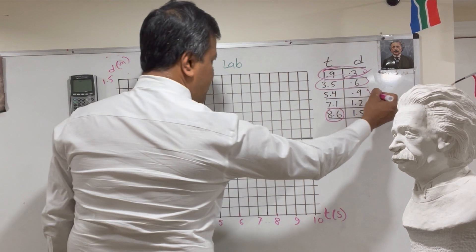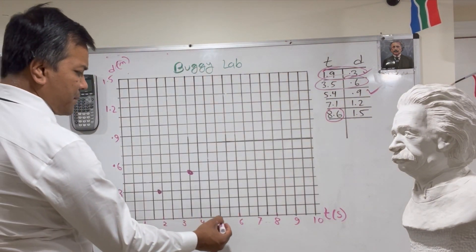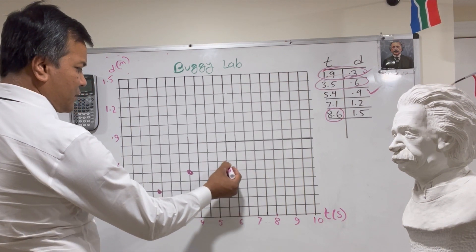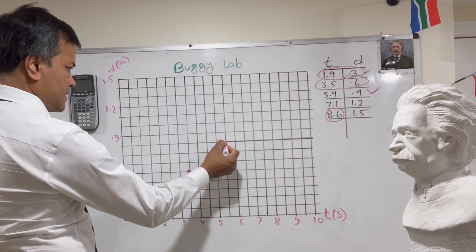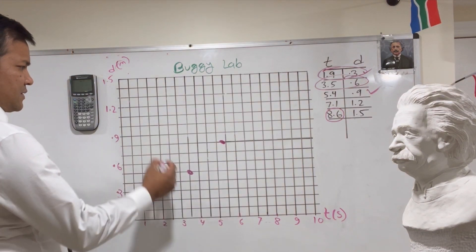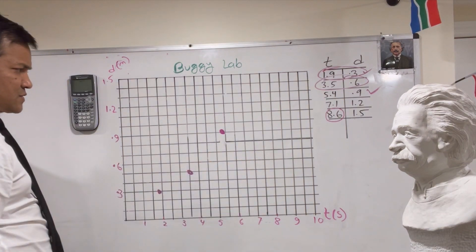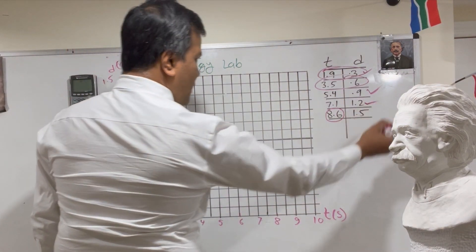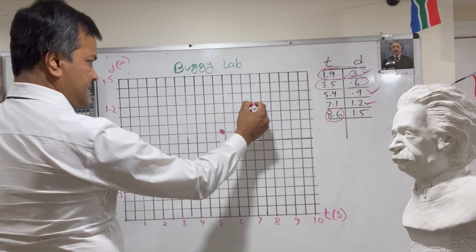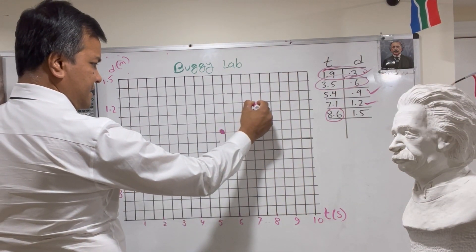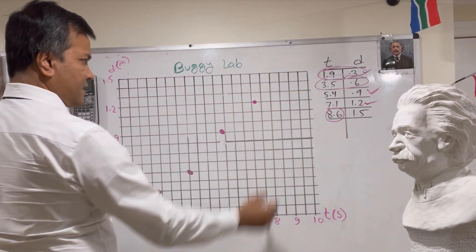The next point is 0.9 meters at 5.4 seconds. 5.4 is close to 5.5 on the axis, so 5.4 is right here. Then 1.2 meters at 7.1 seconds — 7.1 is very close to this point on the axis.